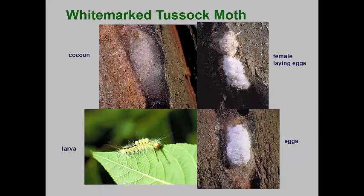Remember that caterpillars have complete life cycles with egg, larval, pupal, and adult stages — it is the larvae that feed on the plant foliage. The white-marked tussock moth female is wingless, so she has to produce a pheromone to attract the winged male for mating. Notice that she attaches her egg mass to her old cocoon, and the eggs are surrounded with a foam-like material to protect them from environmental extremes.